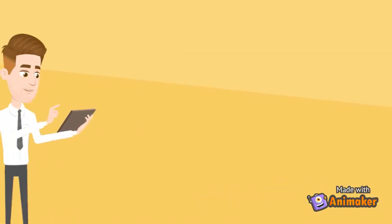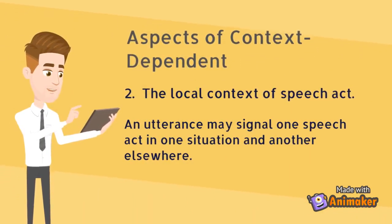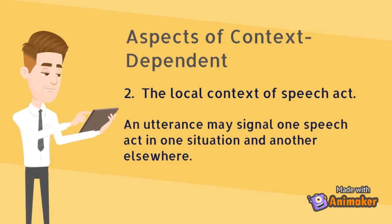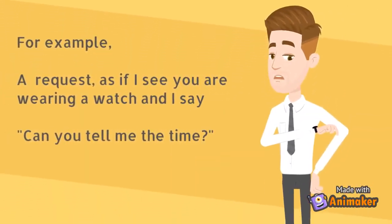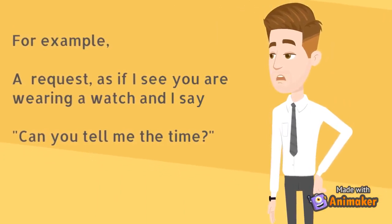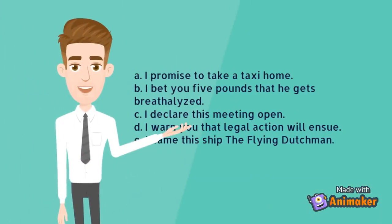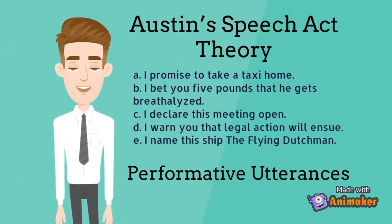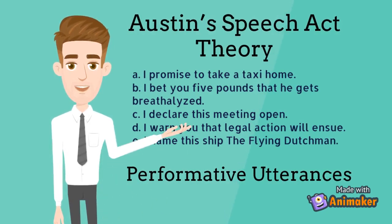The local context of a speech act: an utterance may signal one speech act in one situation and another elsewhere. If the asker already knows the answer, an utterance with the form of a question can be, for example, a request — as if I see you are wearing a watch and I say, 'Can you tell me the time?' Austin claimed of these sentences that they were in themselves a kind of action, and this kind of utterance he called performative utterances, which perform the action named by the first verb in the sentence.